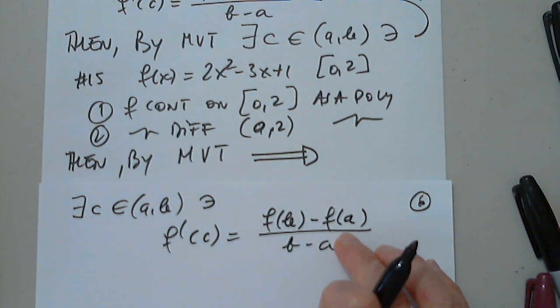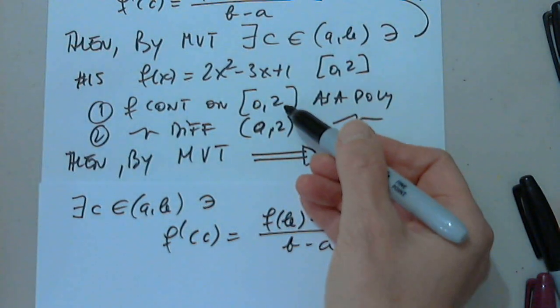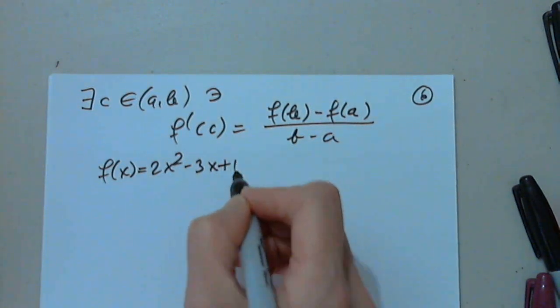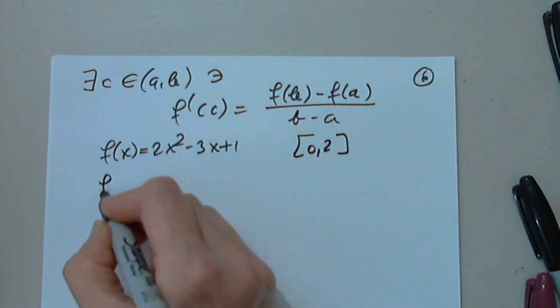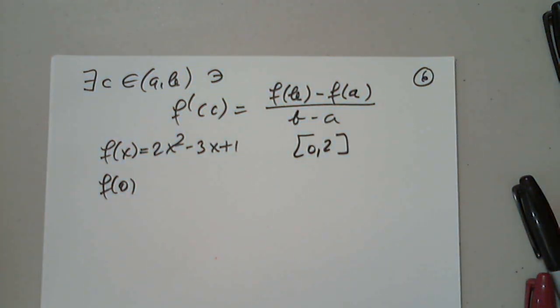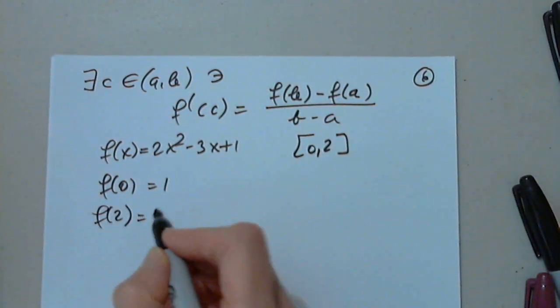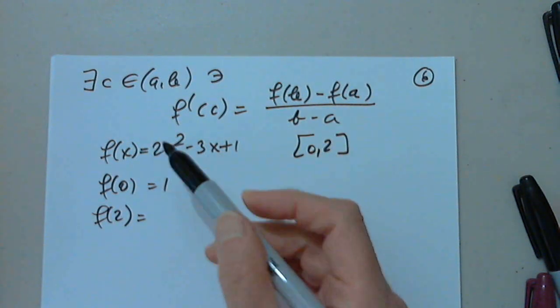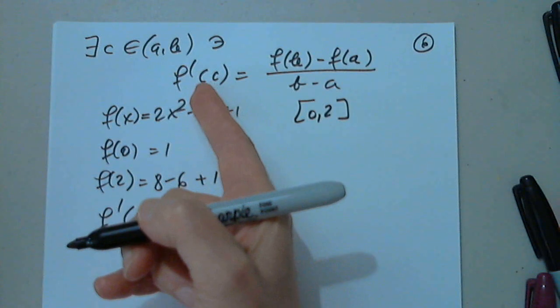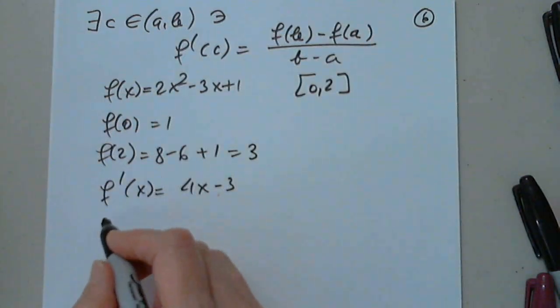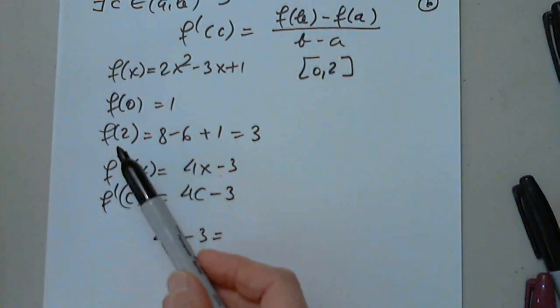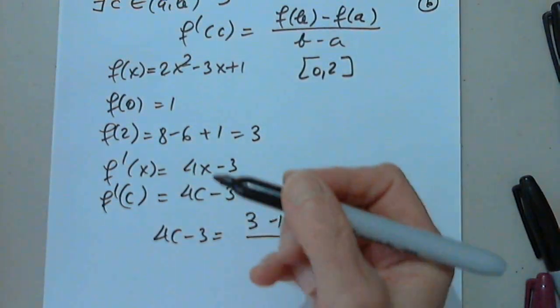The slope of the tangent line equals the slope of the line through a, b. a is 0, b is 2. So let's find, so I'm going to copy the function here, f of x equals 2x squared minus 3x plus 1. And the interval is 0, 2. I have to find f of 0 because this will be f of 2 minus f of 0 over 2 minus 0. So f of 0 is 1, f of 2 is 2 squared is 4, 4 times 2 is 8, 8 minus 6 plus 1 is 3. We have to find f prime of x because I need it on this side, 4x minus 3. And of course, f prime of c will be 4c minus 3. The left-hand side is 4c minus 3. The right-hand side is f of 2 minus f of 0, 3 minus 1 divided by 2 minus 0.